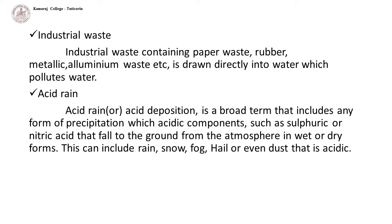Acid rain, or acid deposition, is a broad term that includes any form of precipitation with acidic components such as sulfuric or nitric acid that fall to the ground from the atmosphere in wet or dry forms. This can include rain, snow, fog, hail or even dust that is acidic.